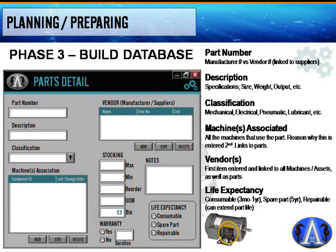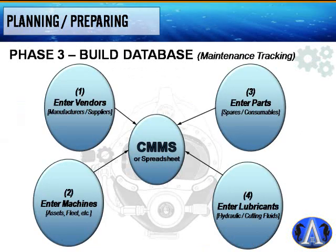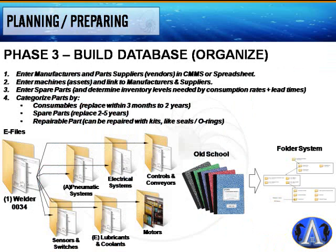Enter spare parts third and determine inventory levels needed based on consumption rate plus lead times. Categorize parts as consumables, spare parts, or repairable. Consumables might be replaced weekly, monthly, or quarterly. For example, create a folder called 'Welder 34' with subfolders for pneumatic systems, electrical systems, controls, conveyor systems, scissors and switches, lubricants and coolants, and motors.